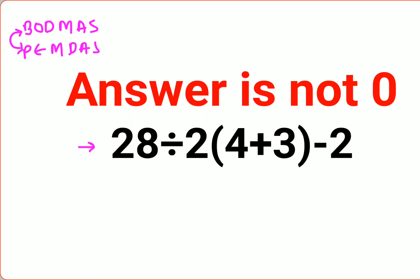So first we keep the rest of the question as it is. We will keep 28 divided by 2 as it is. And the bracket is what? 4 plus 3 which is 7. And since there is no sign between 2 and this bracket, that means the sign carried forward is multiplication. Then we will keep the negative 2 as it is.